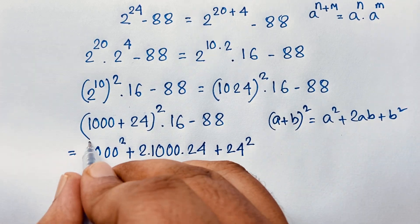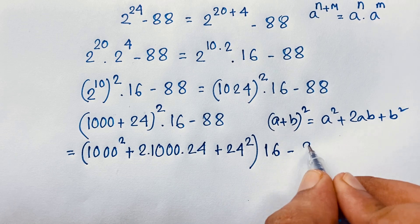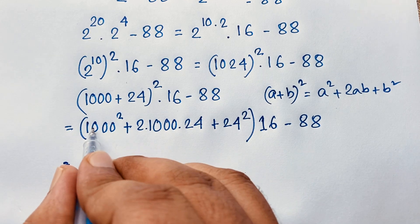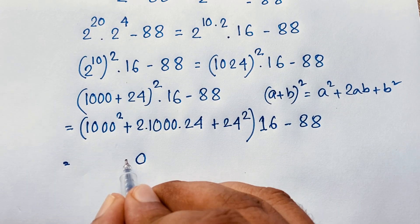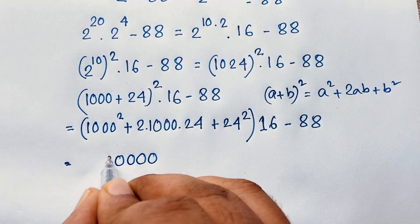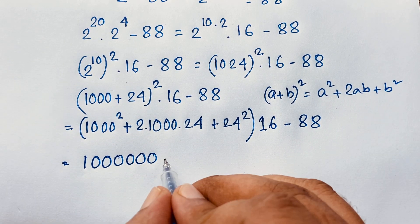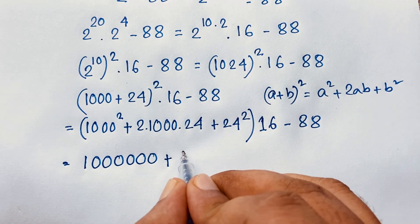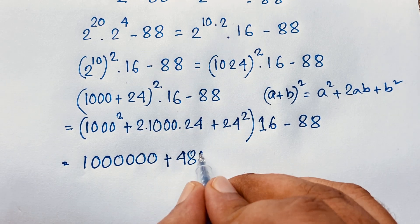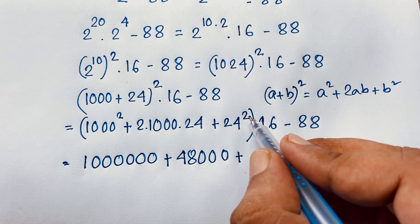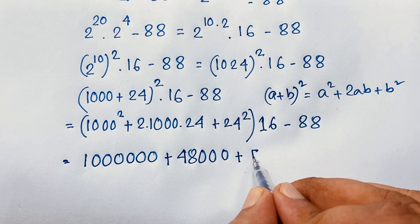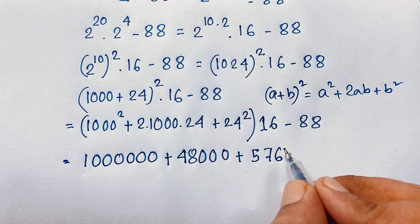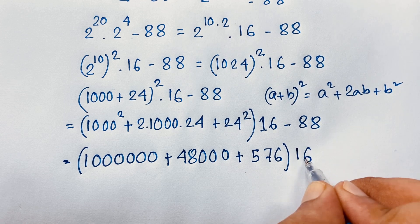And bracket here is 16, and minus 88. Then here 1000 squared — so here is 6 zeros: 1,000,000. Then here 1 plus 2 times 24 it will be 48. 48 times 1000 it will be 48,000. Plus 24 to the power 2 it will be 576.